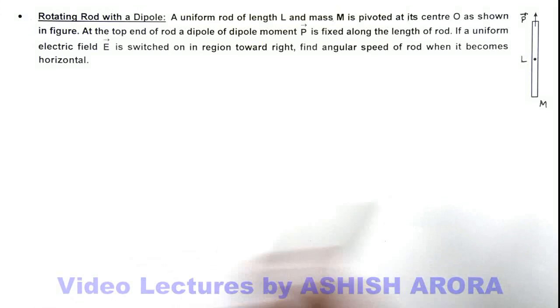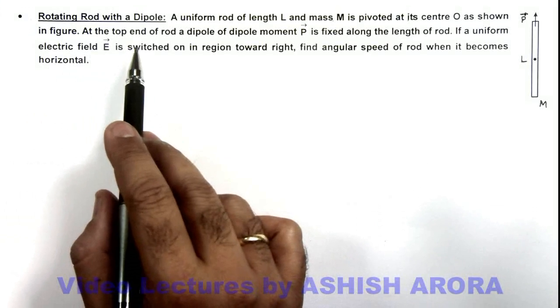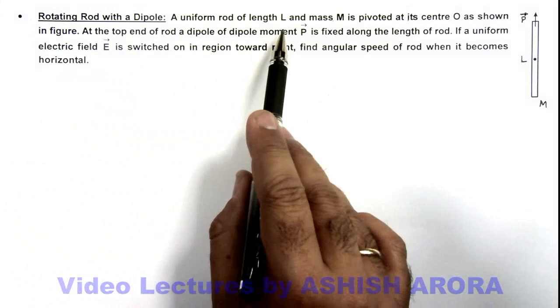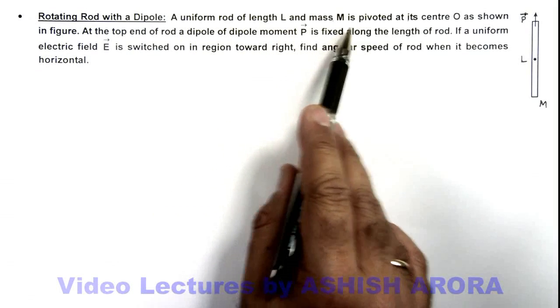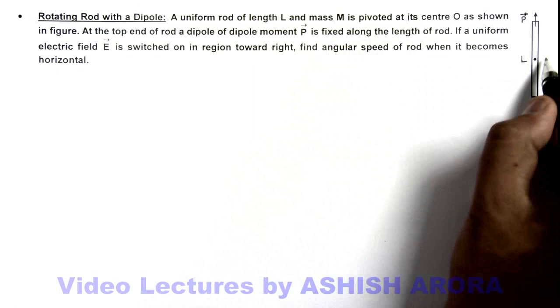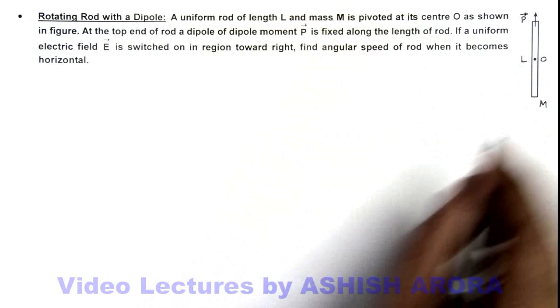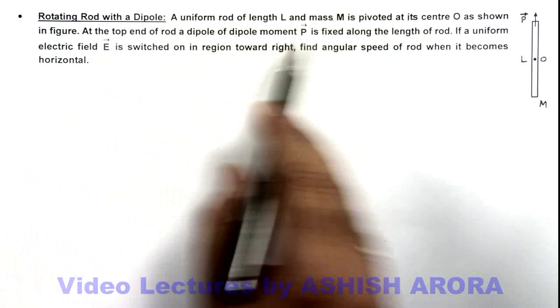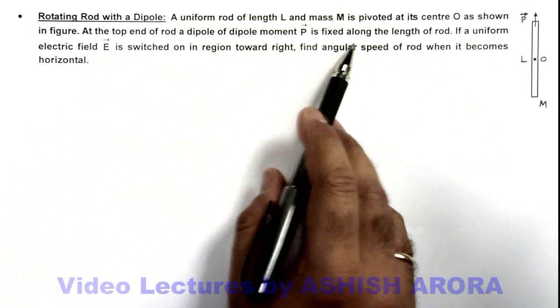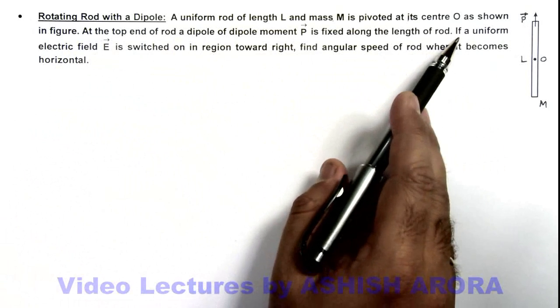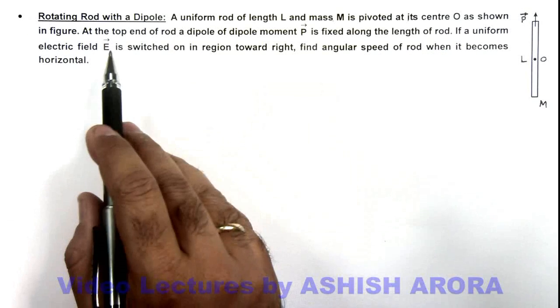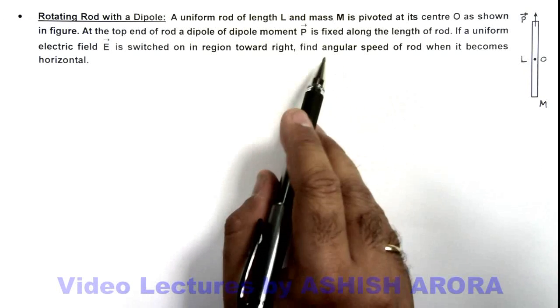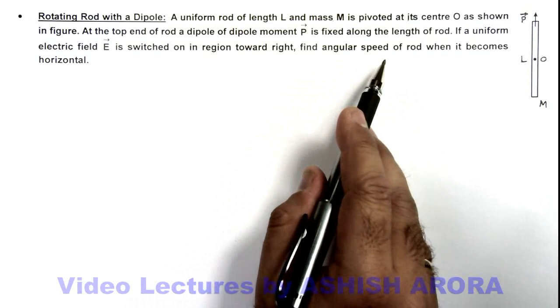In this illustration we'll study about a rotating rod with an electric dipole. A uniform rod of length L and mass M is pivoted at the center O - this is the center O where the rod is pivoted, as shown. At the top end of the rod, a dipole of dipole moment P is fixed along the length of rod. If a uniform electric field E is switched on in region toward right, we are required to find angular speed of rod when it becomes horizontal.